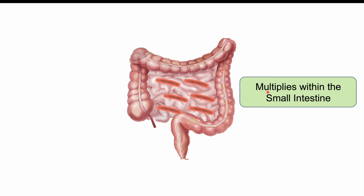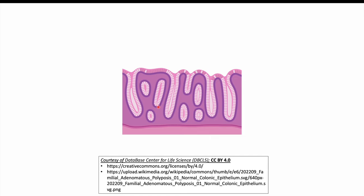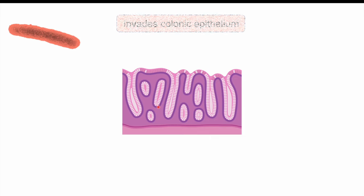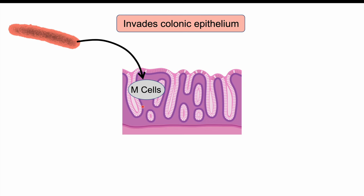The bacteria multiply in the small intestine and eventually get into the large intestine. Once in the large intestine or colon, they can invade the colonic epithelium — the inner lining of the large intestine — through M cells.